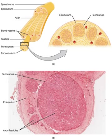The endoneurium forms an unbroken tube from the surface of the spinal cord to the level where the axon synapses with its muscle fibers, or ends in sensory receptors. The endoneurium consists of an inner sleeve of material called the glycocalyx and an outer, delicate meshwork of collagen fibers.